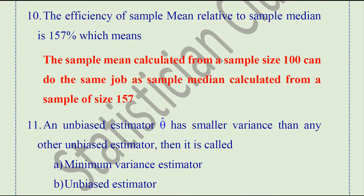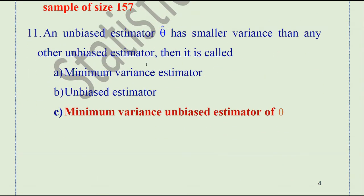The efficiency of the sample mean relative to the sample median is 157 percent. This means that the sample mean calculated from a sample size of 100 can do the same job as the sample median calculated from a sample of size 157. An unbiased estimator theta-hat that has smaller variance than any other unbiased estimator is called the minimum variance unbiased estimator of theta.